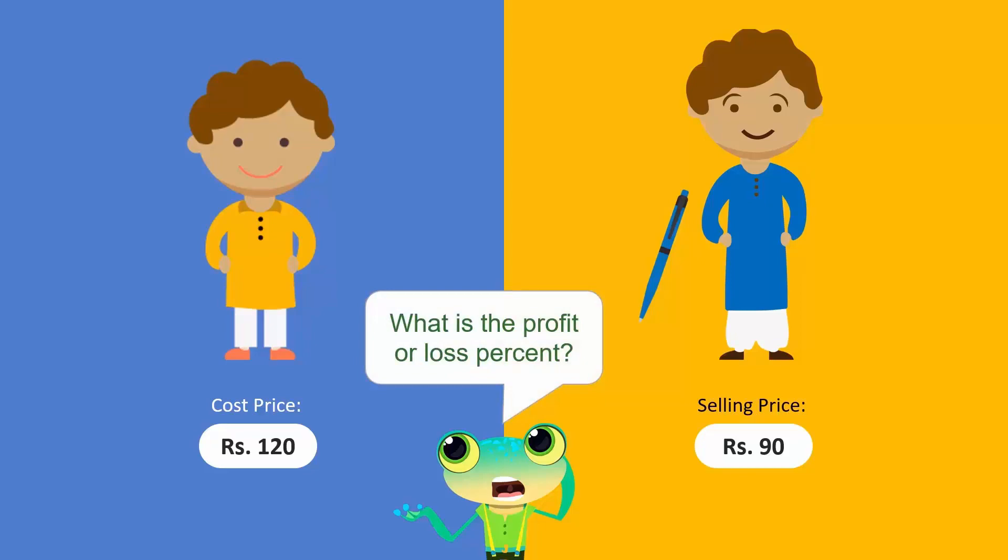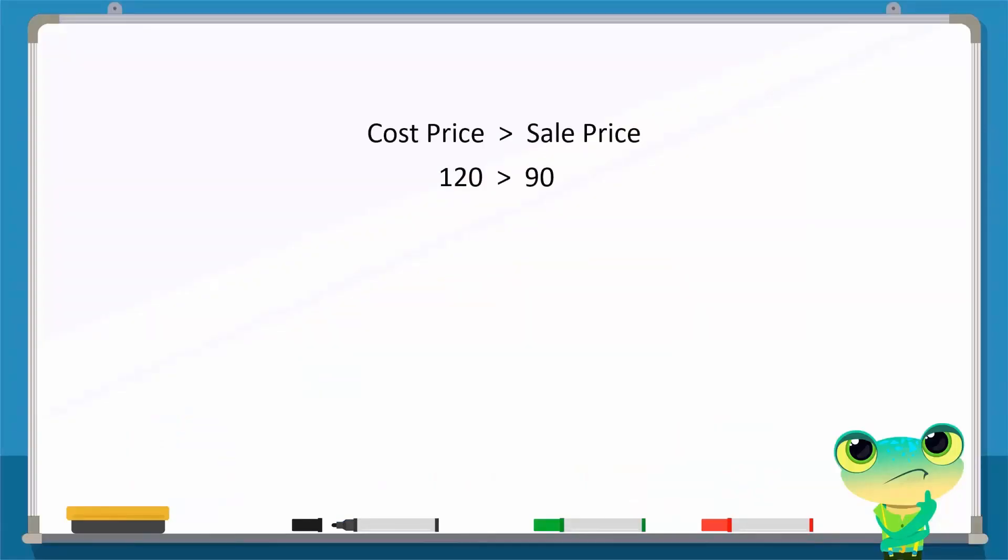Now, the cost price is larger than the sale price, so we know Ali would suffer a loss. Loss is equal to cost price minus sale price, which is 120 minus 90, giving us a loss of 30 rupees. How do we calculate the loss percent?